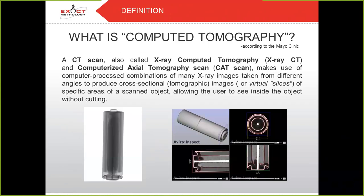What is computed tomography? A CT scan, also called x-ray computed tomography and computerized axial tomography scans, or CAT scans, make use of computer-processed combinations of many x-ray images taken from different angles to produce cross-sectional or tomographic images, or virtual slices, of specific areas of a scanned object, allowing the user to see inside the object without cutting.